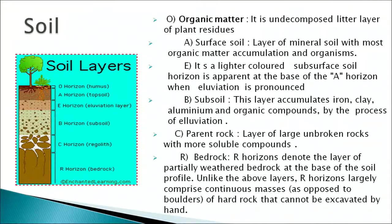Soil is an important component of the ecosystem. The various horizons of the soil are O, A, E, B, C and R. The O or organic matter layer is the undecomposed litter layer of plant residues. A is the surface soil, a layer of mineral soil with most organic matter accumulation and organisms. E is a lighter colored subsurface soil horizon apparent at the base of the A horizon. B, the subsoil, accumulates iron, clay, aluminium and organic compounds by the process of illuviation. C is the parent rock layer with large unbroken rock and more soluble components. R is the bedrock horizon, comprising a continuous mass of rock at the base of the soil profile.